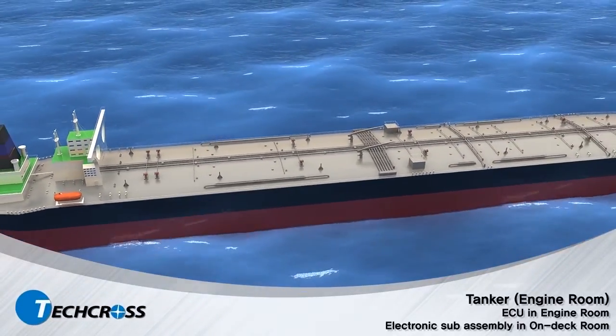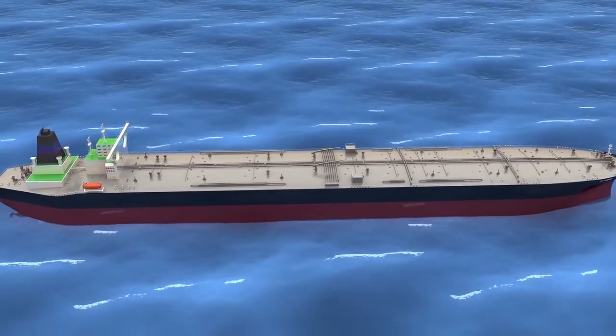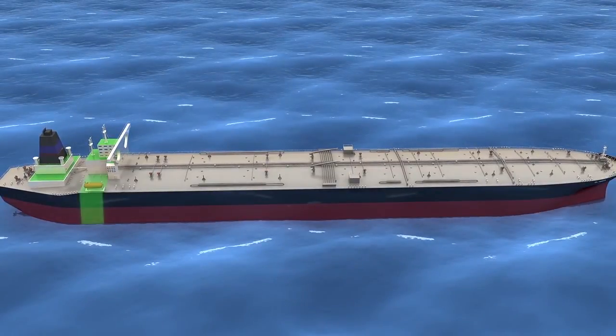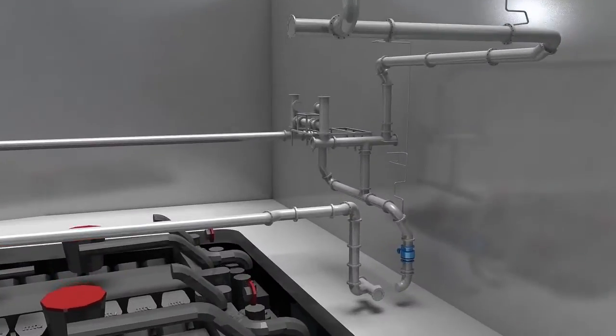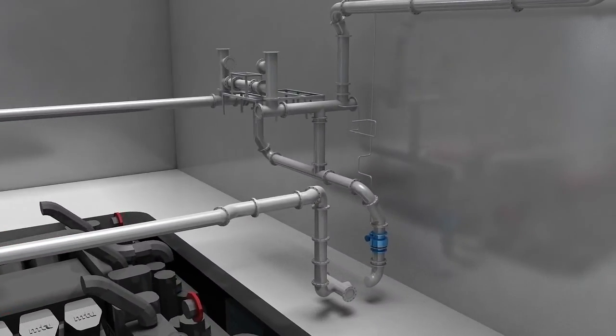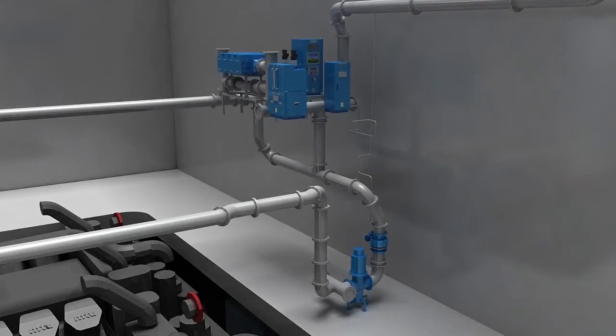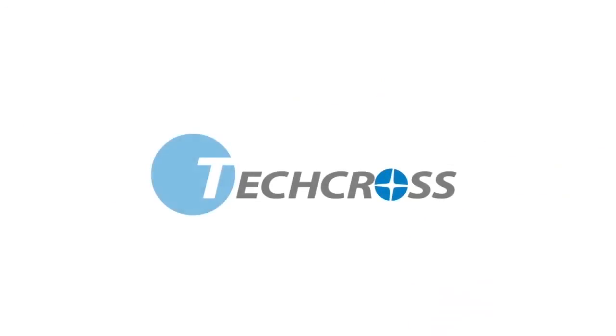Some tankers which have no pump room but submerged ballast pump can install the non-explosive ECU in the engine room with an additional ballast pump. This design is possible because ECS does not require re-treatment at discharging. Even though the additional pump will need to be added in the engine room, this is a much more economical solution.